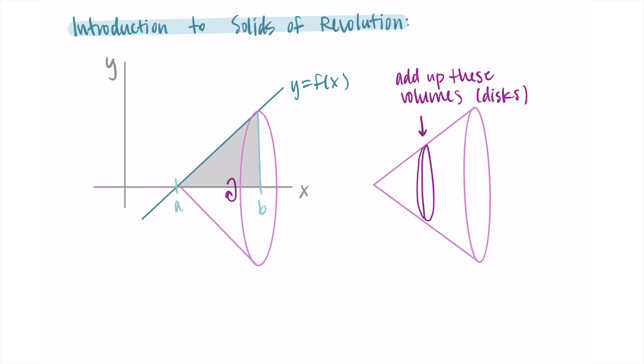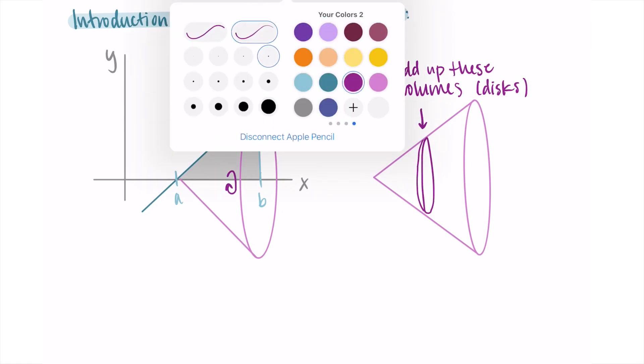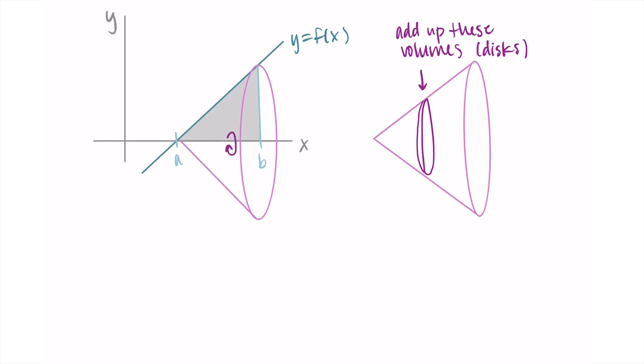Our plan is to create a general formula for any time we have a function and we're revolving it around an axis to find the volume of that new three-dimensional solid created by the revolution. We're learning just one method this time. The task is to find the volume of the solid created by revolving around the x-axis.